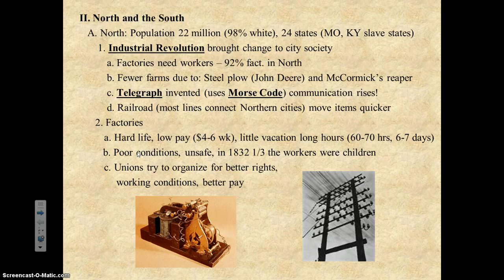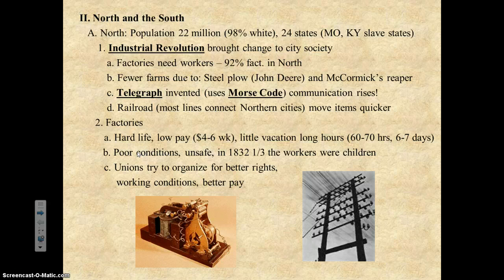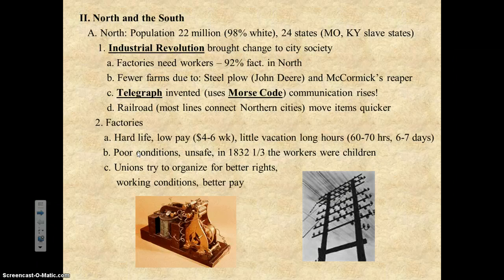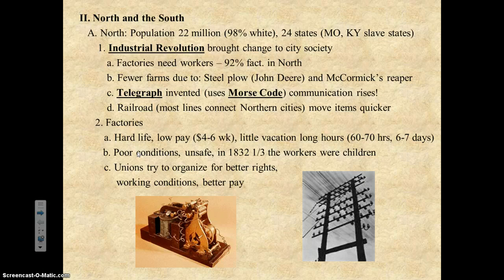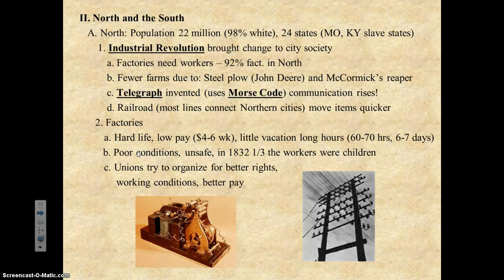The North has 22 million people, with 98 percent of that 22 million being white Americans. There are 24 total states. Missouri and Kentucky are part of the North even though they allow slavery — they are called border states. They will fight for the North when the Civil War breaks out, but they do allow slavery.